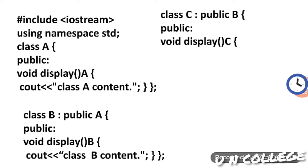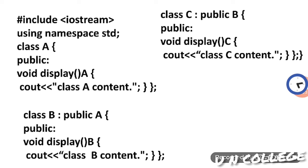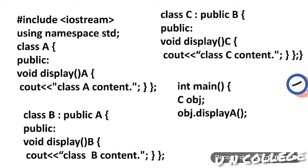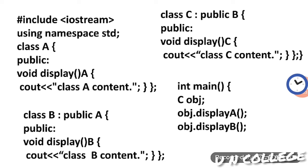In the public part of class C I have used void displayC, and inside the displayC method I have used cout 'Class C content'. In the main method I created one object of class C called obj. obj.displayA executes class A's displayA method, obj.displayB executes class B's displayB method, and obj.displayC executes class C's displayC method.